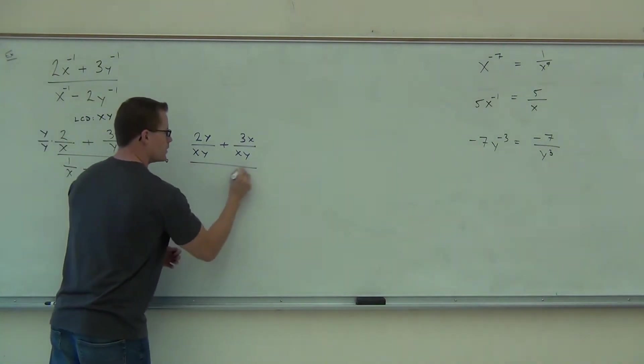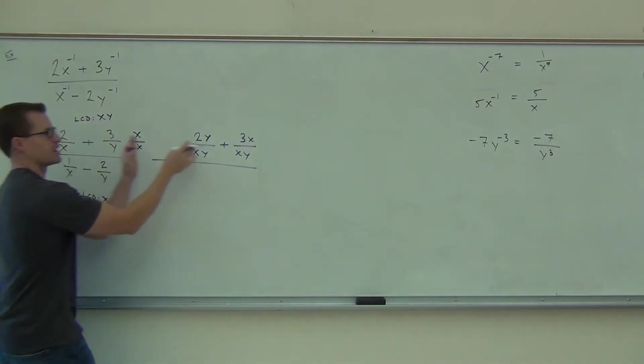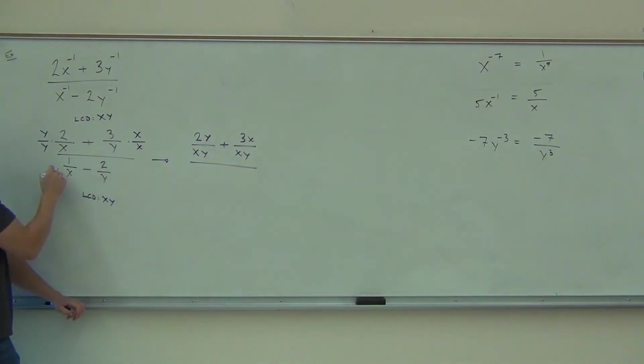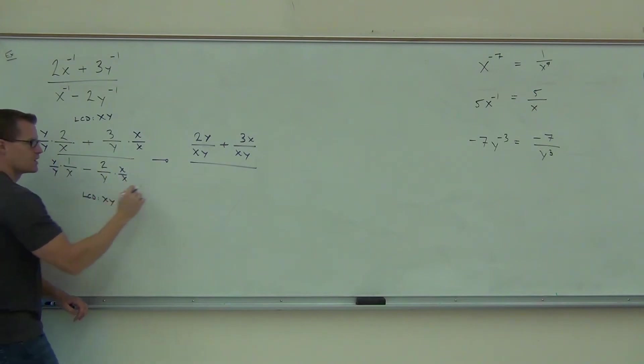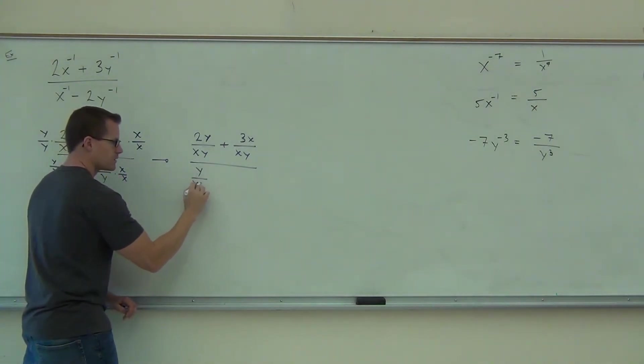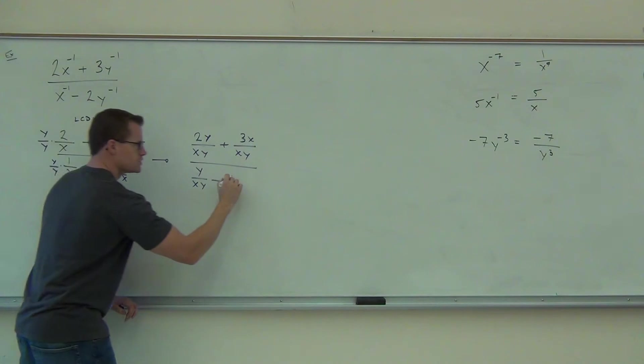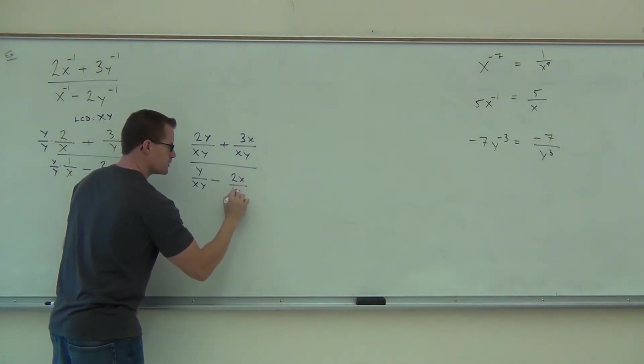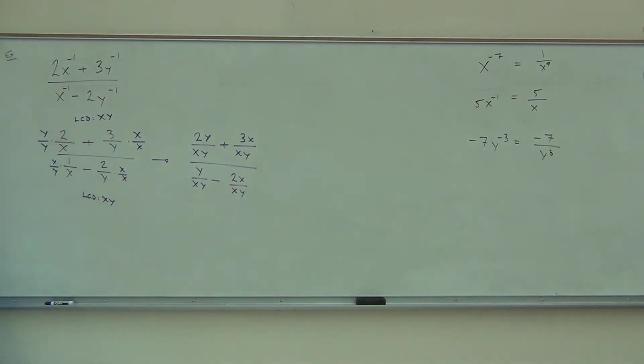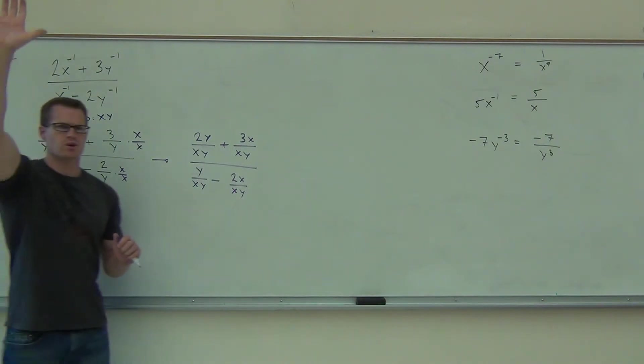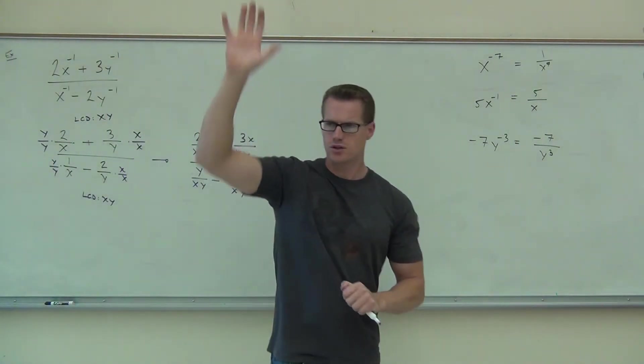Are you still so far so good on this? You sure? Over. We have our LCD. We have that now in all spots. That's great. Over. Again, we're going to multiply this one by Y over Y and this one by X over X. We'll get Y over XY. We'll get 2X over XY.